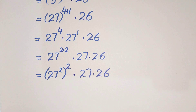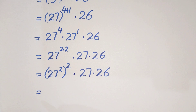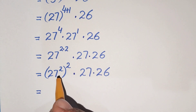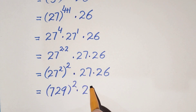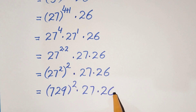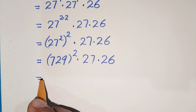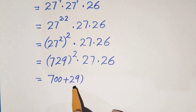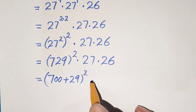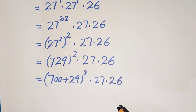A calculator is not allowed here, so we are going to work using exponential laws. Now 27 squared equals 729, so we have 729 whole squared times 27 times 26. Now 729 can be written as 700 plus 29, whole squared, times 27 times 26.